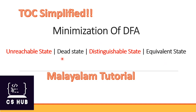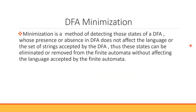In this video, we will talk about the unreachable state, dead state, distinguishable state, and equivalent state. We will try to minimize DFA. DFA minimization is a method of detecting those states of a DFA whose presence or absence does not affect the language or the set of strings accepted by the DFA. Thus, these states can be eliminated or removed from the finite automata without affecting the language accepted by the finite automata.